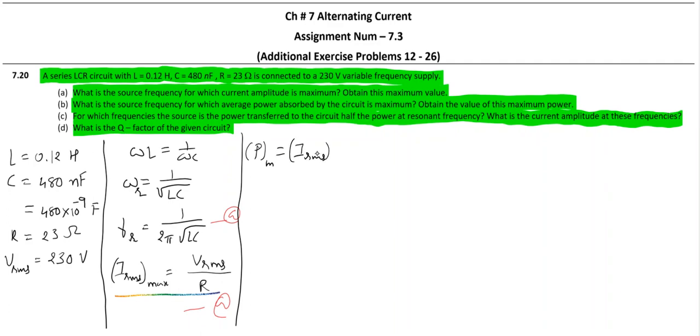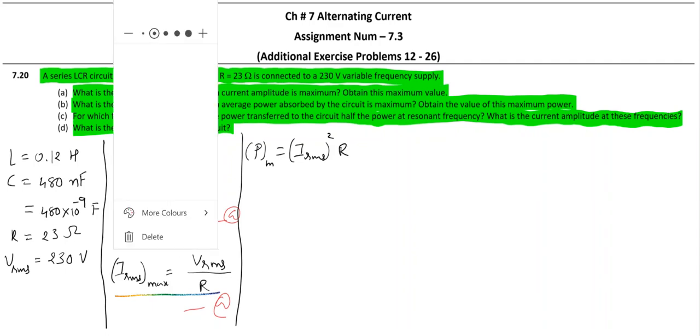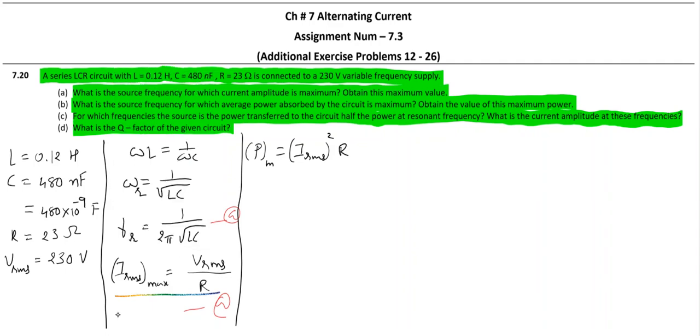So whatever we get here is the maximum current, and that will produce maximum power which can be given as: maximum power is I_rms squared into R. In the first one you can find out maximum value of power with root 2 I_rms max. This is maximum value of power and this is the answer. The source frequency remains same f_r, and power is I squared R.